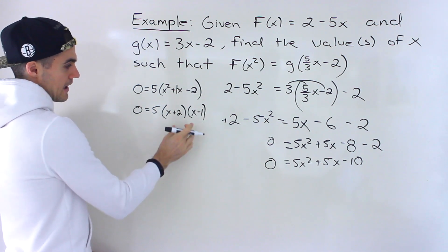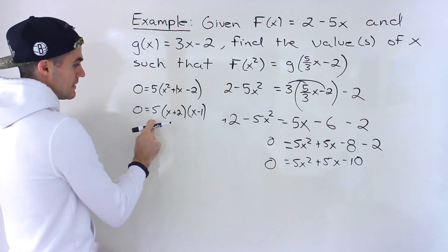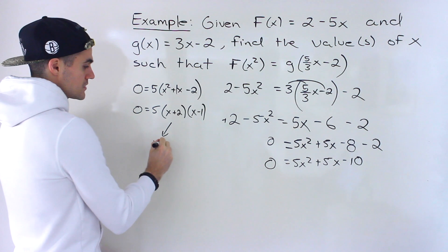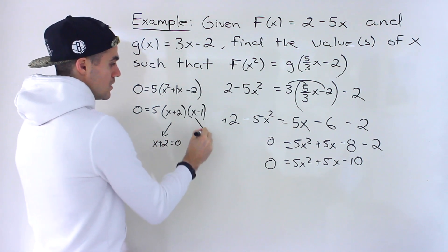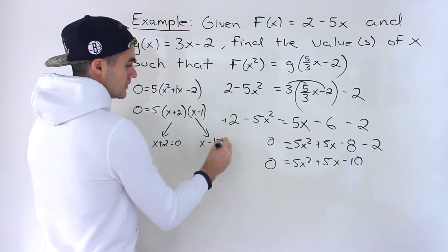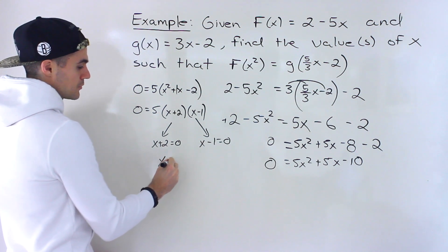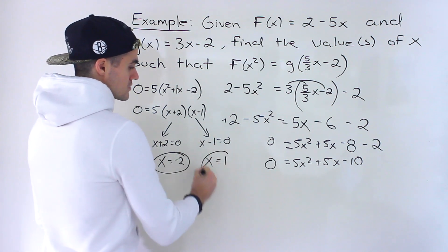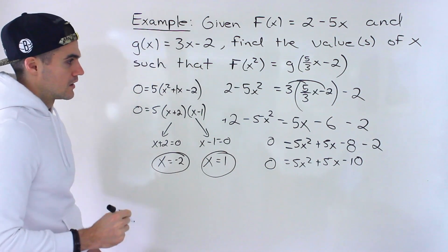And so notice that we can now find out when is this whole right side going to be 0? Well, it's going to happen when x plus 2 is equal to 0 or when x minus 1 is equal to 0. So that's going to happen when x is negative 2. This is going to happen when x is equal to 1.